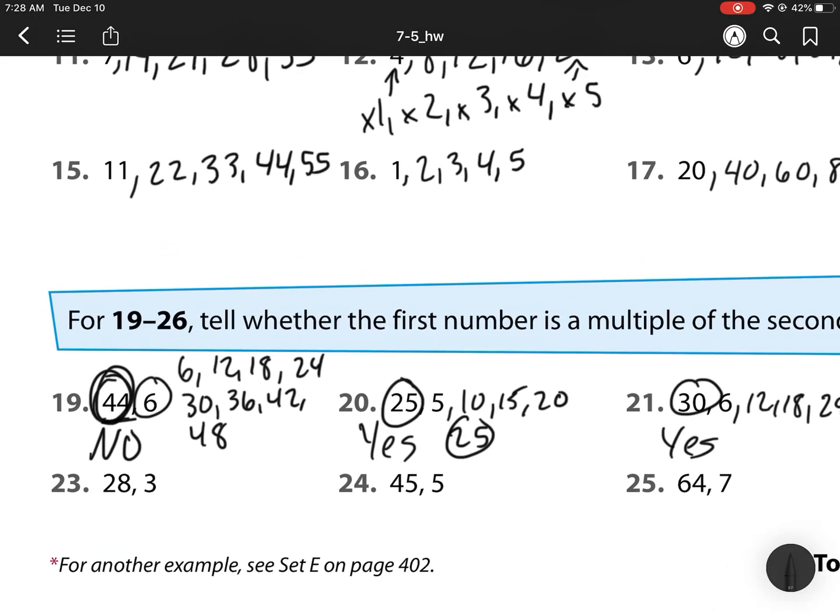For 23, let's think 3 times what equals 28? Well, I know 3 times 7 is 27. And 3 times 8, oops, I messed that up. 3 times 9 is 27. And 3 times 10 is 30. So, there's no way I can get a number to equal 28 if multiplied by 3. So, this one is a no.